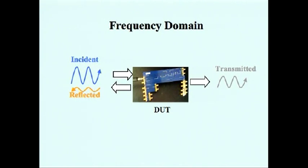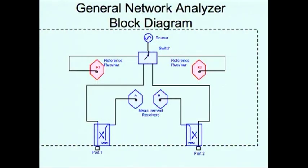A network analyzer analyzes a circuit or device under test by comparing the signal that is applied to the circuit, the incident signal also called the reference signal, with a signal that goes through or is reflected from the circuit. The network analyzer needs to control the reference signal to provide an accurate comparison.